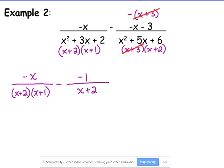So looking at the denominators, they both got x plus 2. But one of them's got x plus 1. The other one does not have x plus 1. So we need to make it have x plus 1. So we multiply the second one, top and bottom, by what it's missing: x plus 1.